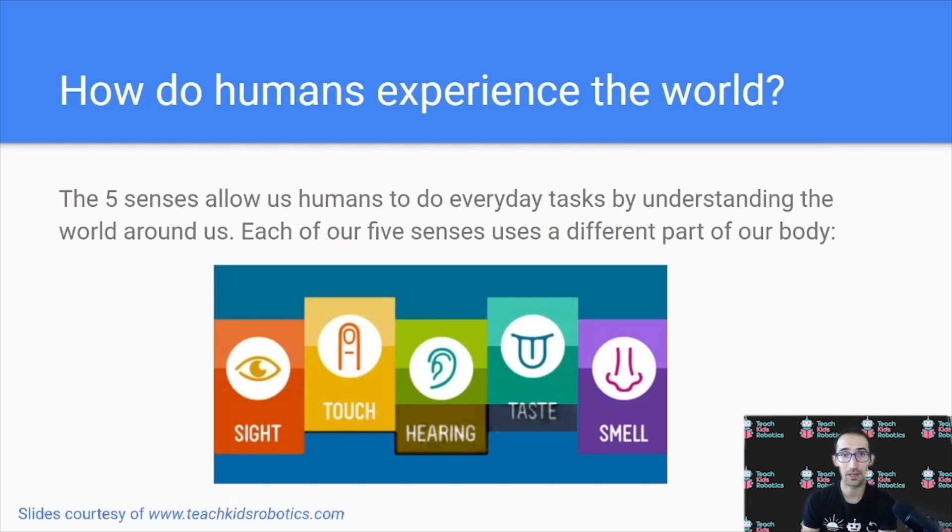Before talking about how robots experience the world, let's first ask ourselves how do humans experience the world? The five senses allow us humans to do everyday tasks by understanding the world around us. Each of our five senses uses a different part of our body. For example, sight comes from our eyes, touch from our hands, hearing from our ears, taste from our mouth, and smell from our nose. Each of these five senses are used in our daily tasks.